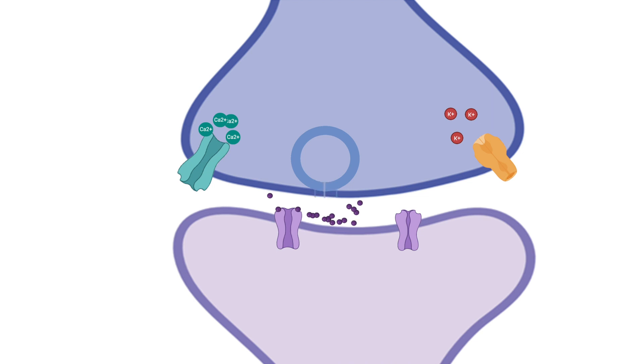After releasing the neurotransmitters, the vesicle will close and move away from the synaptic cleft. Positively charged calcium ions that have already flowed into the cell have now depolarized the neuron far enough to reach the threshold of voltage-gated potassium channels, which will now open, allowing an efflux of potassium ions.